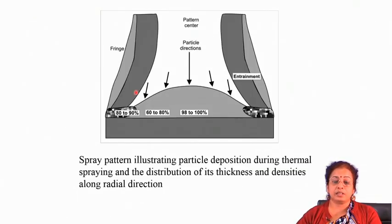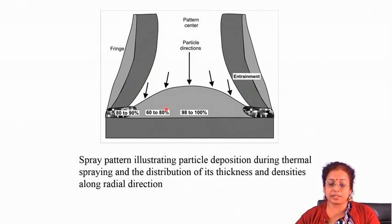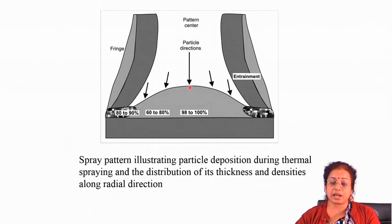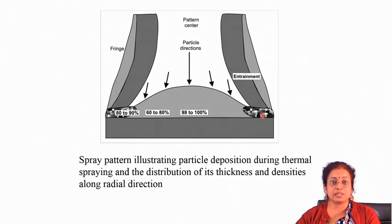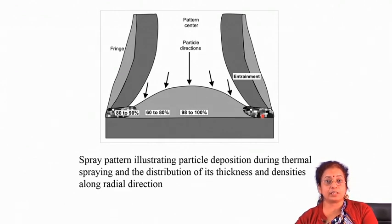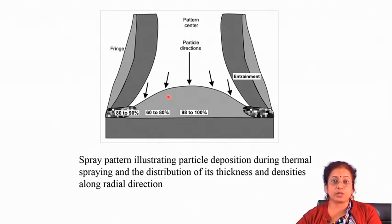Regarding coating thickness and how properties vary with radial distance from the nozzle center: in the middle, the coating rate is maximum and coating is highly dense, but as you move radially outward, both coating density and thickness decrease. Therefore, you should have overlapping of two tracks so that you get uniform thickness all throughout the substrate. It is important to have several overlapping tracks to produce a dense coating with uniform thickness.